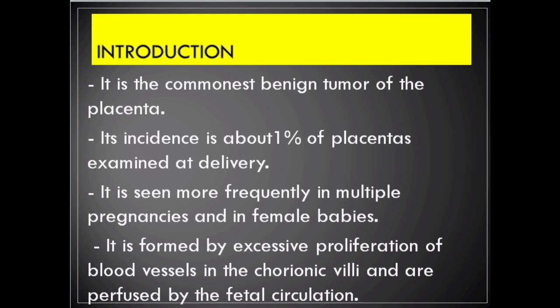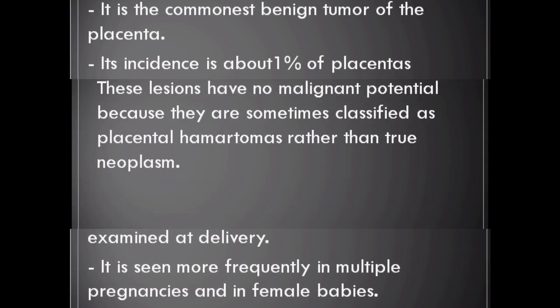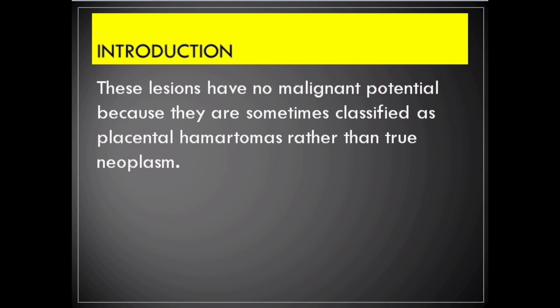Chorioangioma is the commonest benign tumor of the placenta. Its incidence is about 1% of placentas examined at delivery. It is seen more frequently in multiple pregnancies and in female babies. It is formed by excessive proliferation of blood vessels in the chorionic villi and is perfused by the fetal circulation. These lesions have no malignant potential, as they are sometimes classified as placental hematomas rather than true neoplasms.